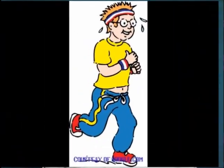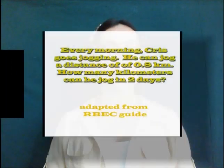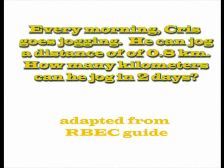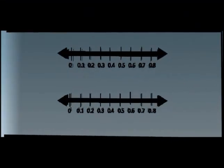Let's try that in this problem. Every morning, Chris goes jogging. He can jog a distance of eight-tenths kilometer. How many kilometers can he jog in two days? To solve the problem, we have to multiply eight-tenths by two. We draw two number lines divided into eight parts, numbered starting from zero — 0.1, 0.2, and so on until we reach 0.8.